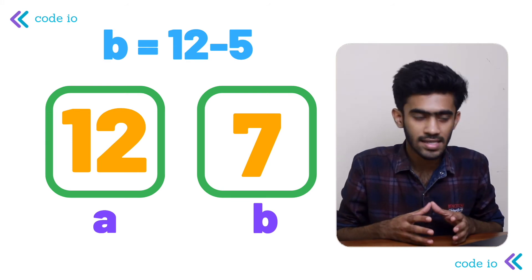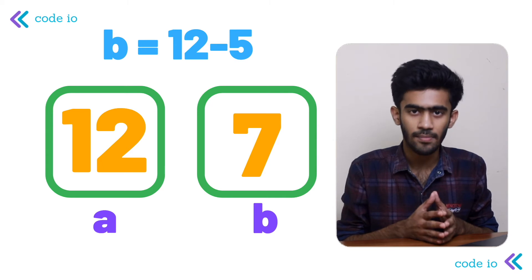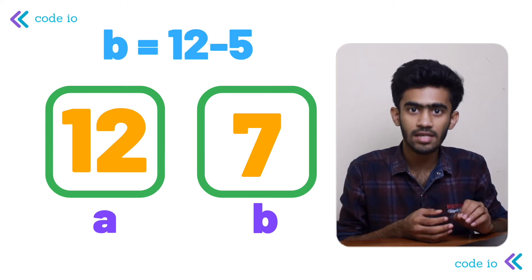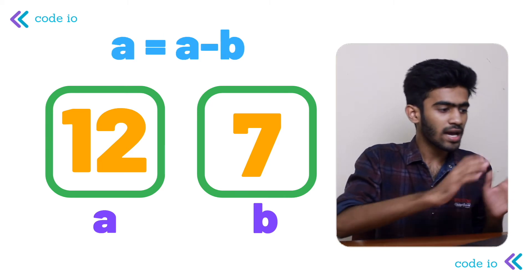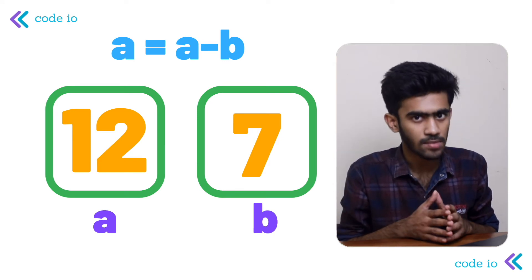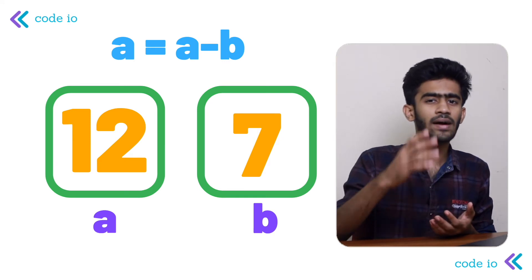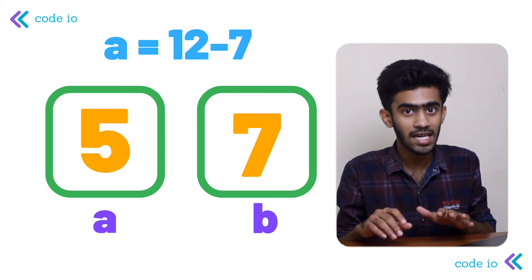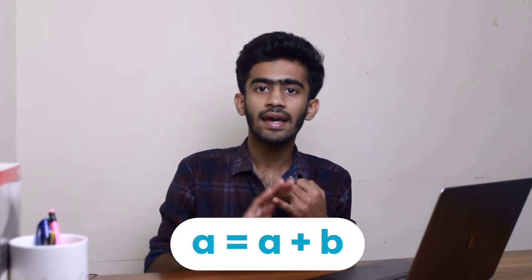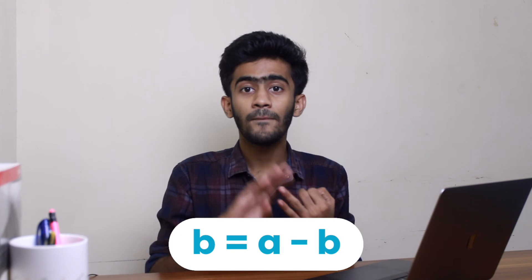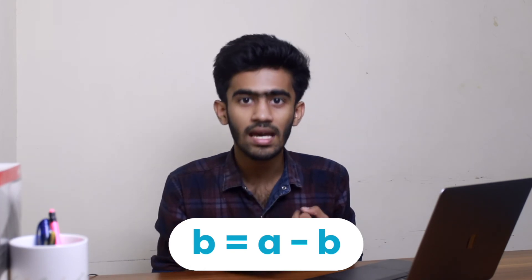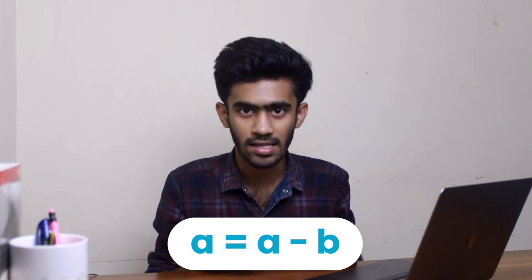Now all we need is for the value 5 to be stored in a. The last expression handles that: a is equal to a minus b. The value of a is 12 and the value of b is 7, so 12 minus 7 gives us 5 — the original value of b. So the three expressions are: a equals a plus b, b equals a minus b, and a equals a minus b. These three expressions give us the swap.